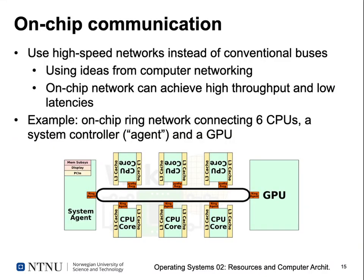Using a joint bus system becomes more and more inefficient as the number of CPU cores grows. Another idea, inspired by computer networks like Ethernet, is to realize a high-speed network on the chip instead of conventional buses. These on-chip networks can achieve very high throughputs and low latencies, and can be configured in many different ways. For example, six CPU cores can be connected via a ring network where one CPU core can send information in one direction arriving at other cores, with a GPU, a system controller, and a system agent also attached to the ring.